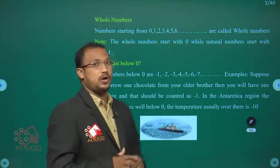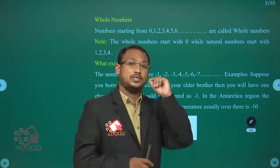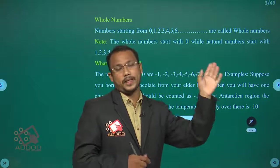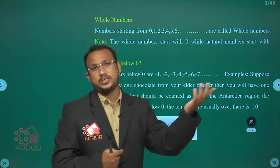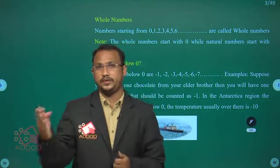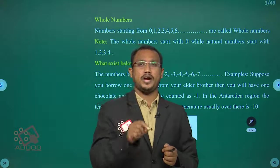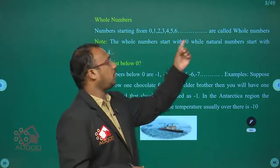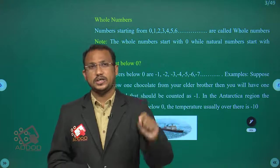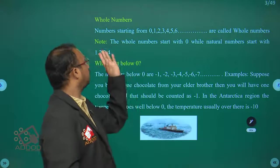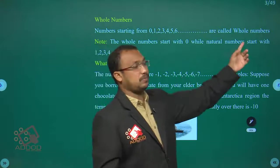Next are whole numbers. Whole numbers start from zero: zero, one, two, three, four, and so on. The difference between natural numbers and whole numbers is that natural numbers start from one, while whole numbers start from zero.